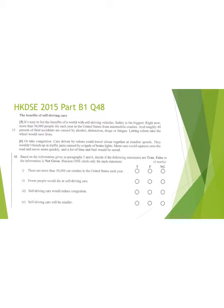Now let's look at the final example, also from 2015, Part B1, question number 48. Please pause the video if you want to find the answers on your own. Statement number one: there are more than 30,000 car crashes in the United States each year. This is a very tricky question because in paragraph five you know that more than 30,000 people die each year. However, you don't know the number of car crashes — that number is not mentioned. So this is actually a not given statement.